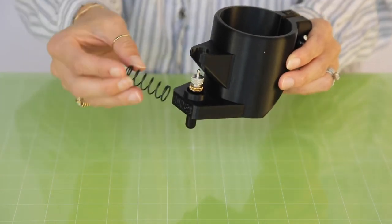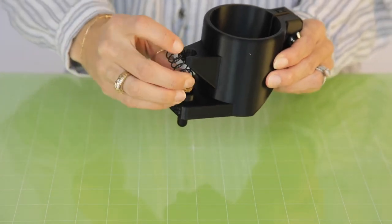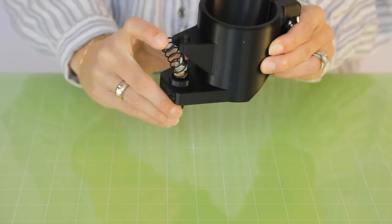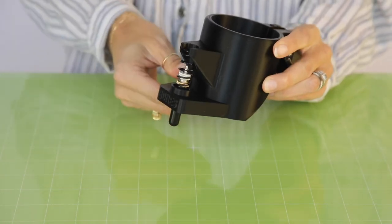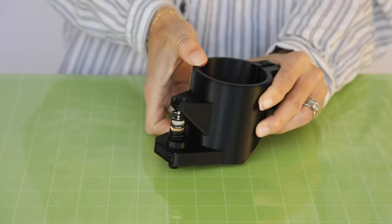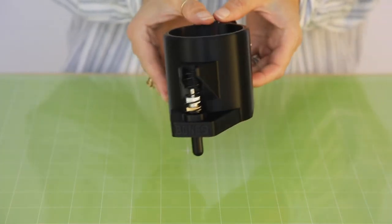Insert the spring on top of the blade holder while pushing down and inserting it into the mount. It should click into place. Once the blade holder is set, you can mount it to your machine.